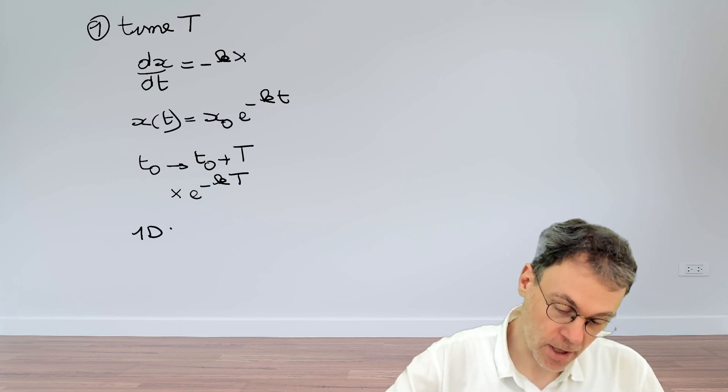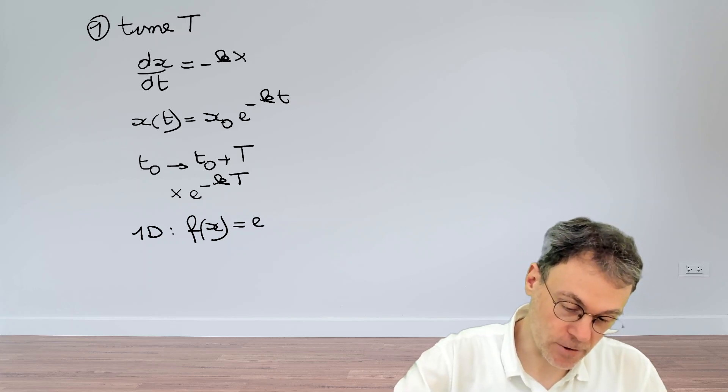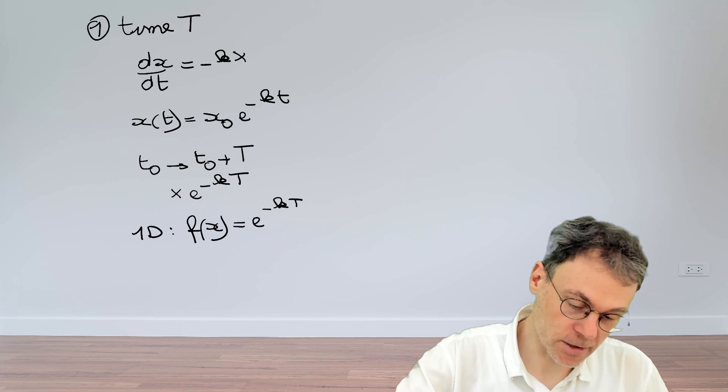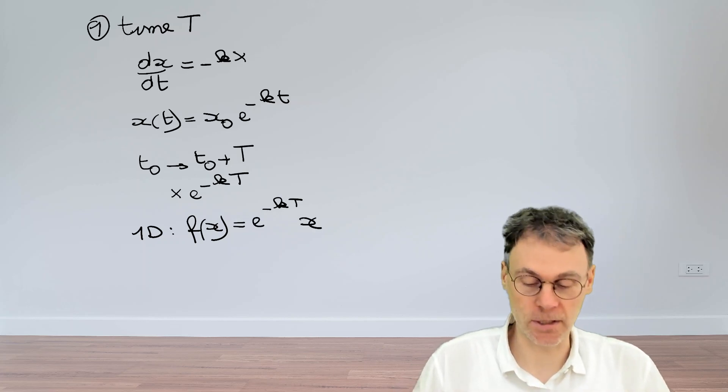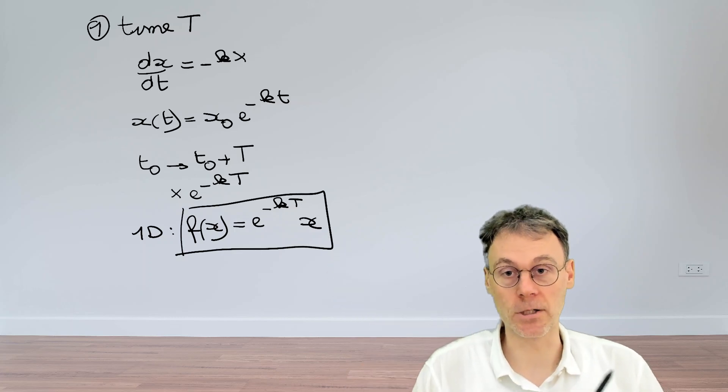So this is how you construct a discrete time map. You have a 1D map, which will be governed by the following update equation. So the previous states just get multiplied by minus kT. So this is our time t map for this very simple, trivial example.